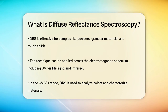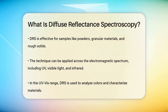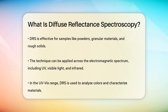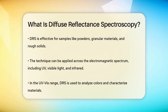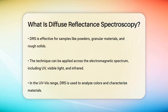In DRS, a light source illuminates the sample, and the intensity of the light that is scattered back is measured over a range of angles. This is particularly useful for samples that don't have smooth surfaces, like powders, granular materials, or even rough solids.